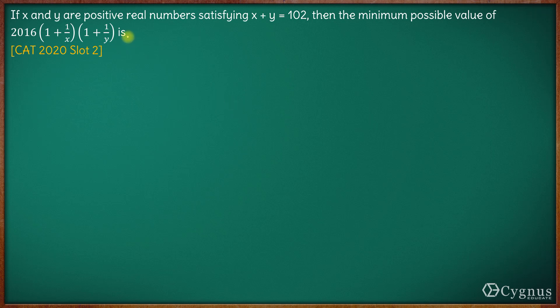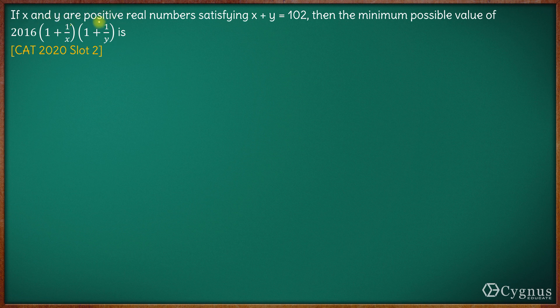In this question, we have: if x and y are positive real numbers satisfying x plus y equals 102, then the minimum possible value of the given expression is how much?